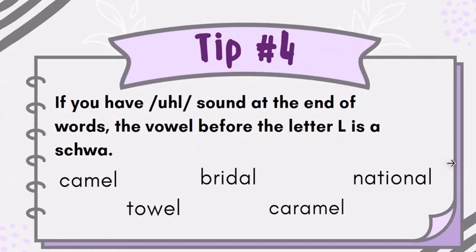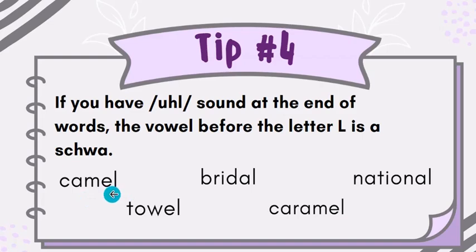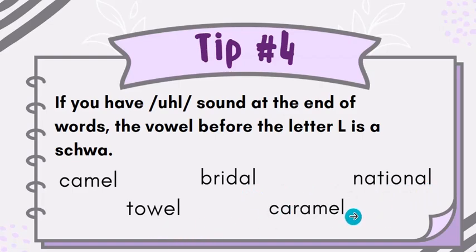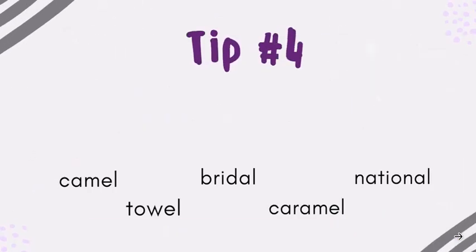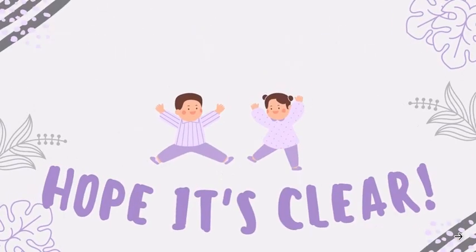Tip number four: if you have an 'ul' sound at the end of words, the vowel before the letter L is most likely a schwa. For example: camel — we are saying the 'ul' sound, so this E is a schwa. Bridal — this A is a schwa. National — A before L is a schwa. Towel, caramel — same pattern.